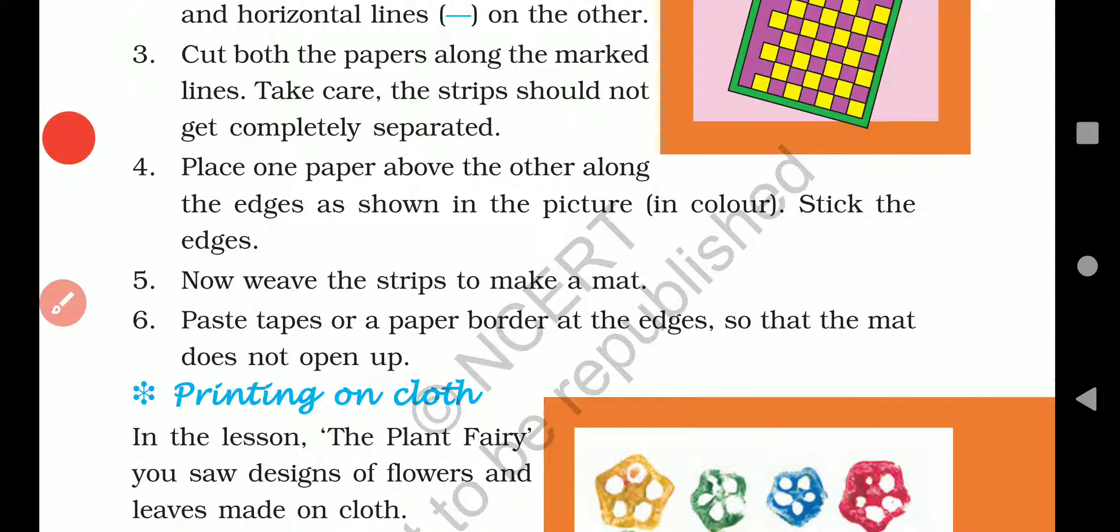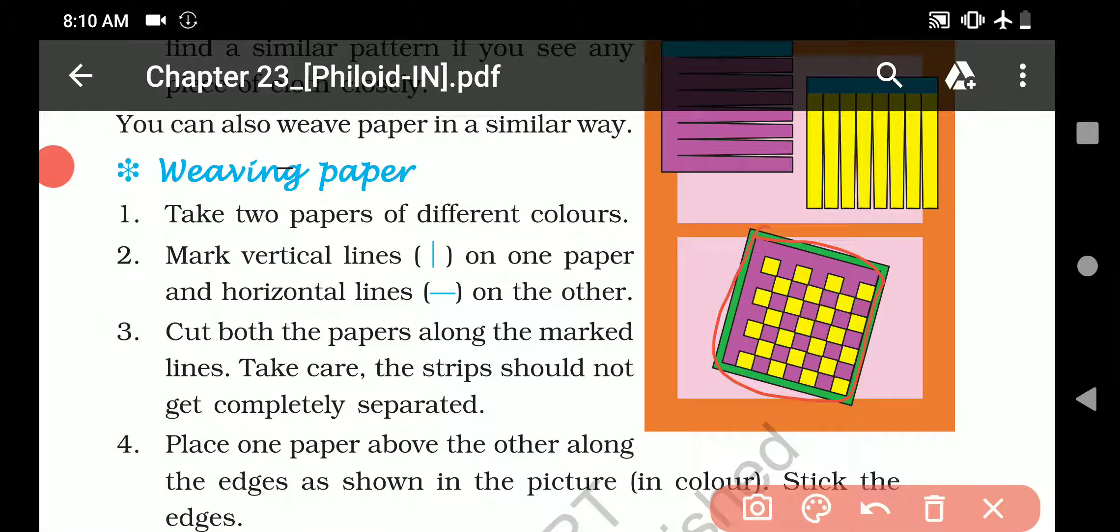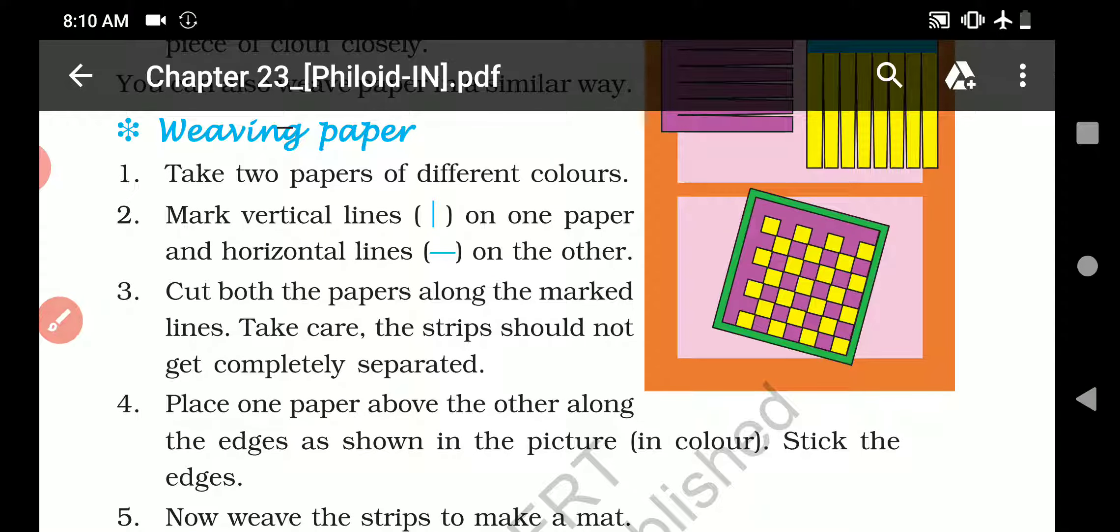Now weave the strips to make a mat. This way you will weave all the strips to make a mat. Paste tape and a paper border at the edges so that the mat does not open up. At the last, when your mat is ready, you will put tape on all four sides or glue, or put a paper border on the edges so the mat doesn't open up. So you will do this activity at home.